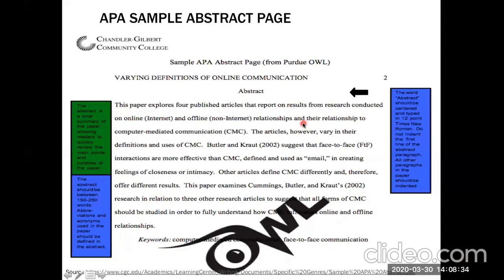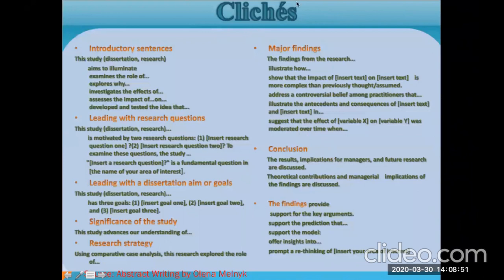You can retrieve and download many samples of research abstracts by visiting the OWL from Purdue Writing Center. I'm also providing some useful phrases — in the introductory sentences you should use expressions such as: 'This study,' 'This dissertation,' 'This research aims to,' 'examines the role of,' 'explores why,' 'investigates the effects of,' 'assesses the impact of.' These are very useful phrases, and you can find many more on Google.